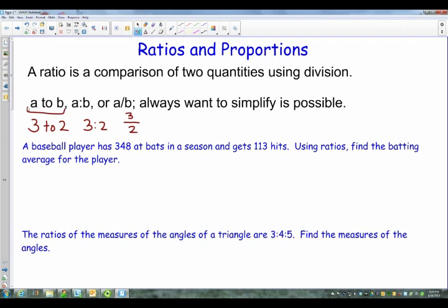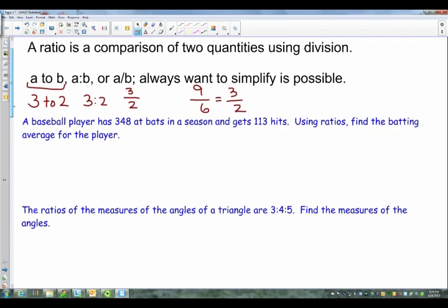Now what that is, is a reduced form of a fraction and we always want to simplify. No matter what, you want to get it as low as possible. So if I gave you the fraction or the ratio 9 to 6, you're going to simplify. Both of those can be divided by 3, and that reduces down to that 3 to 2. So if you're given a problem, try and simplify and reduce as far as possible.